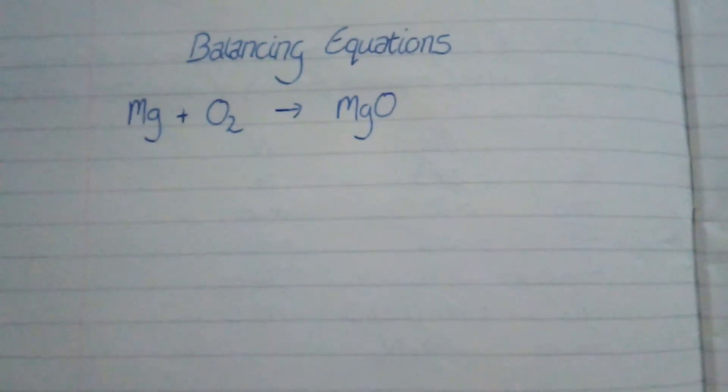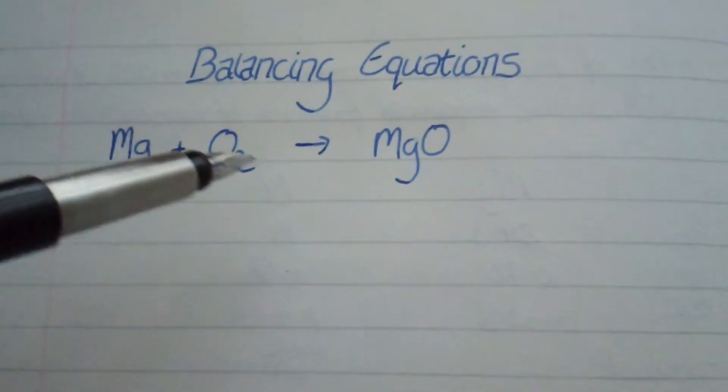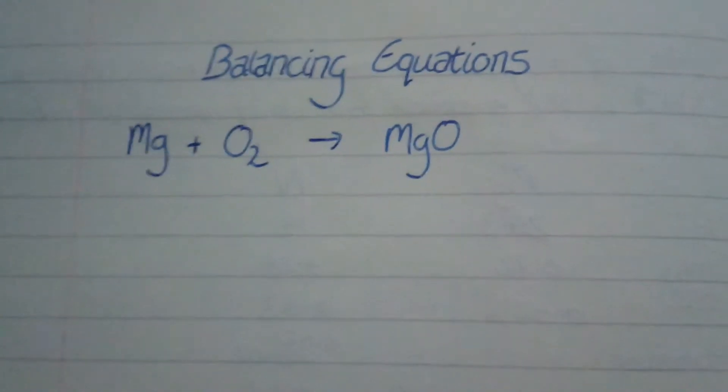Now, if you remember, we did this as a practical. So making magnesium oxide. Magnesium and oxygen makes magnesium oxide, really simple.